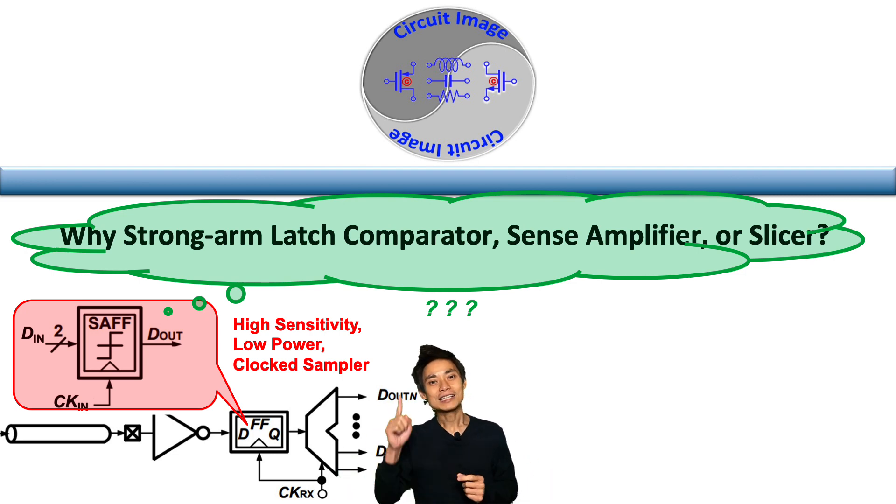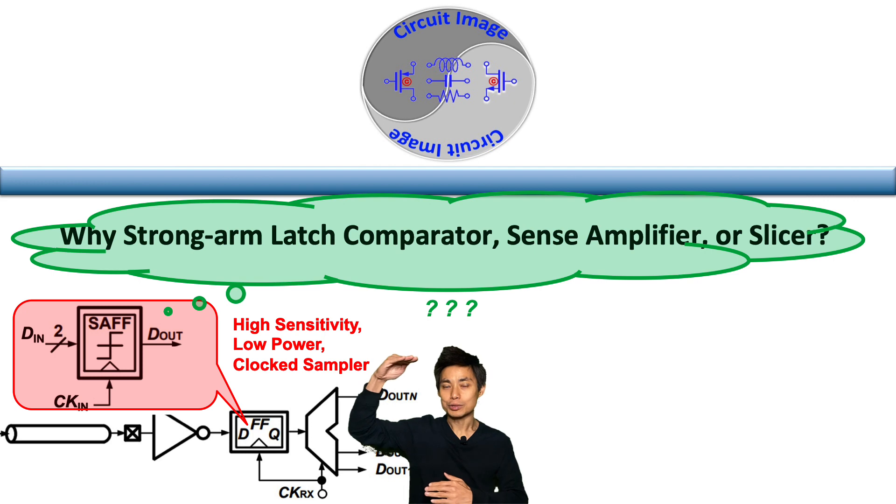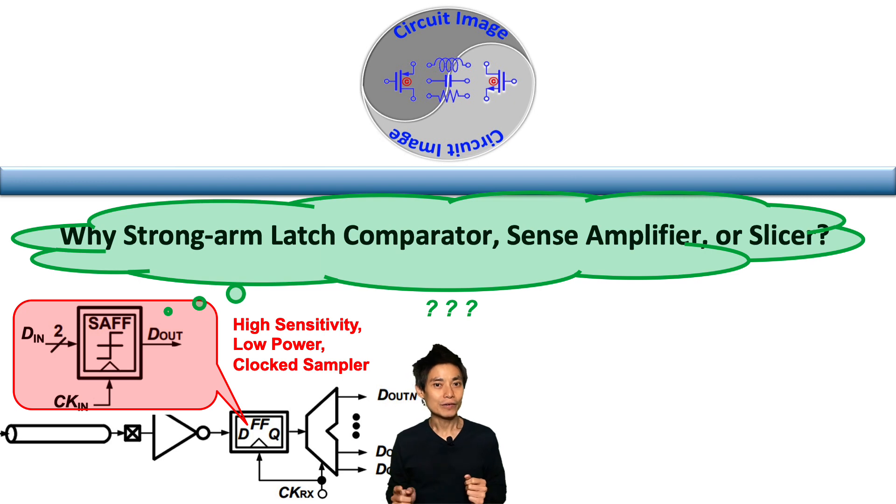First of all, a high sensitivity means a small input swing can be converted to a rail-to-rail output swing, and that's equivalent to a very high voltage gain. So how do we achieve a very high voltage gain and low power at a high speed at the same time?